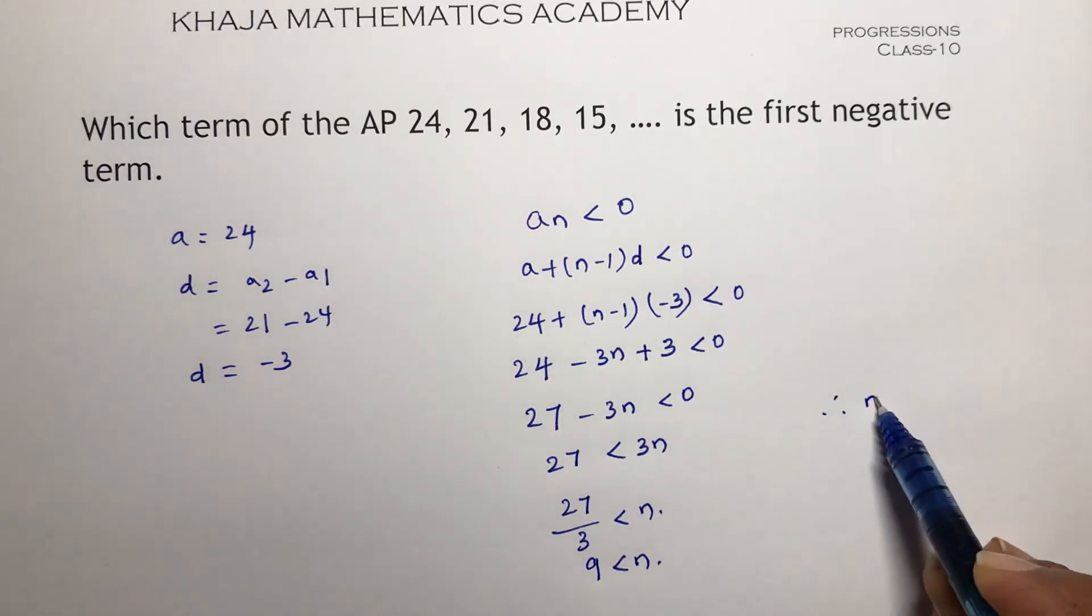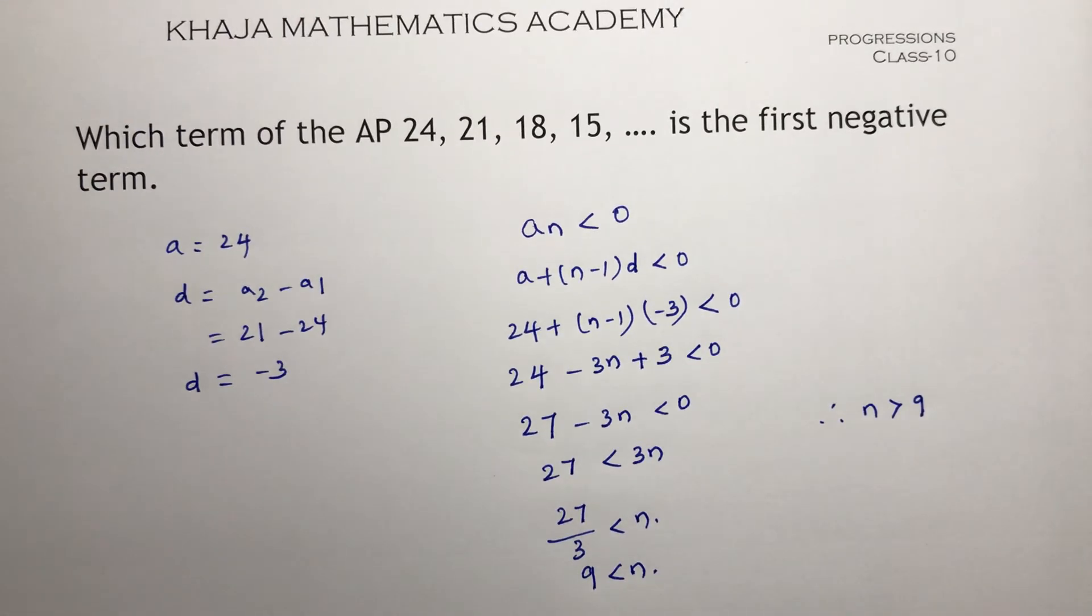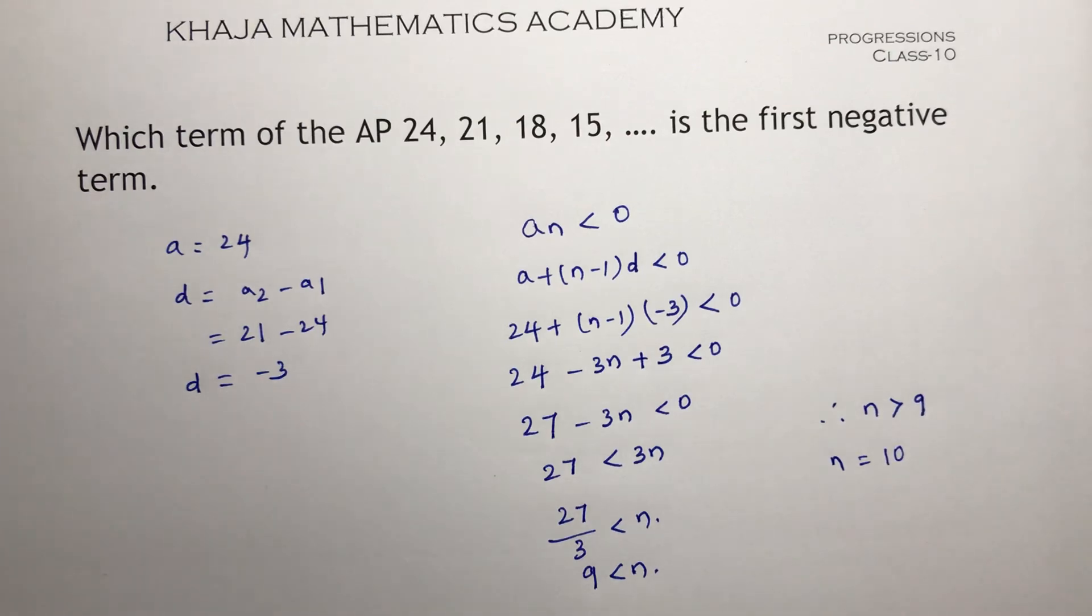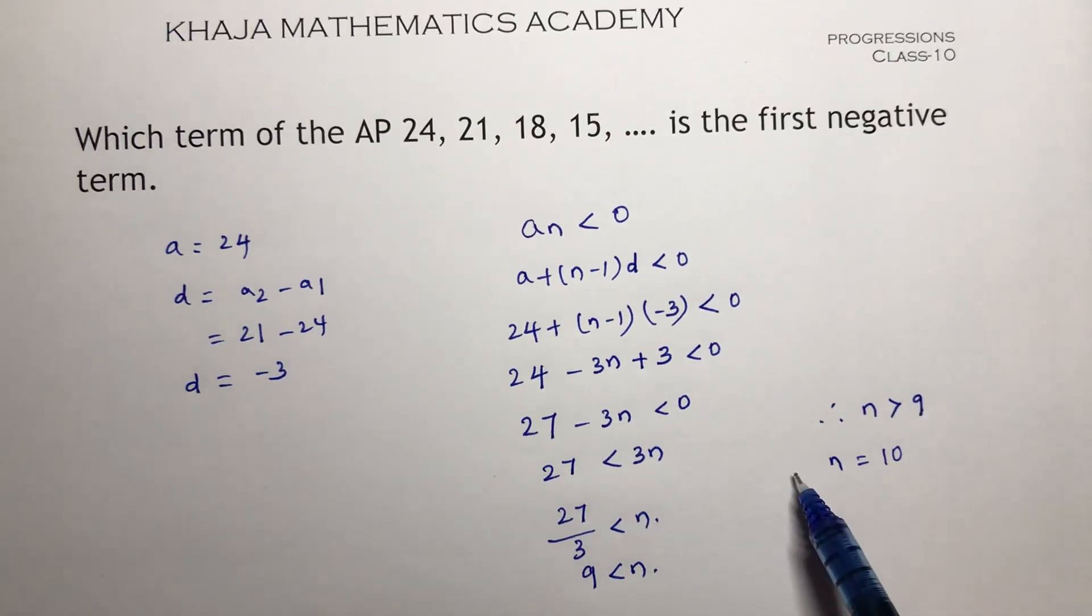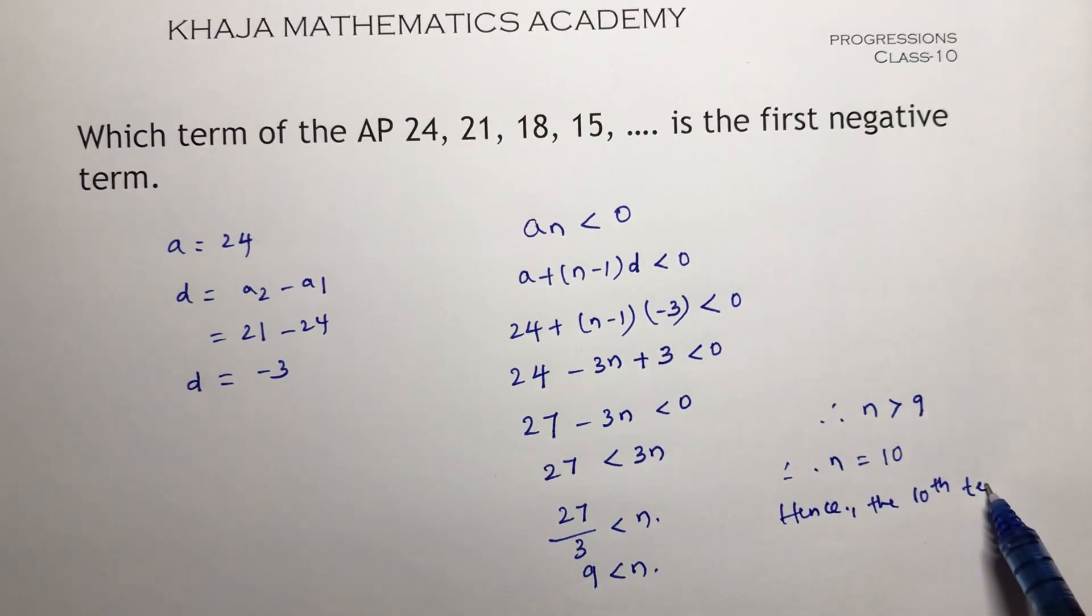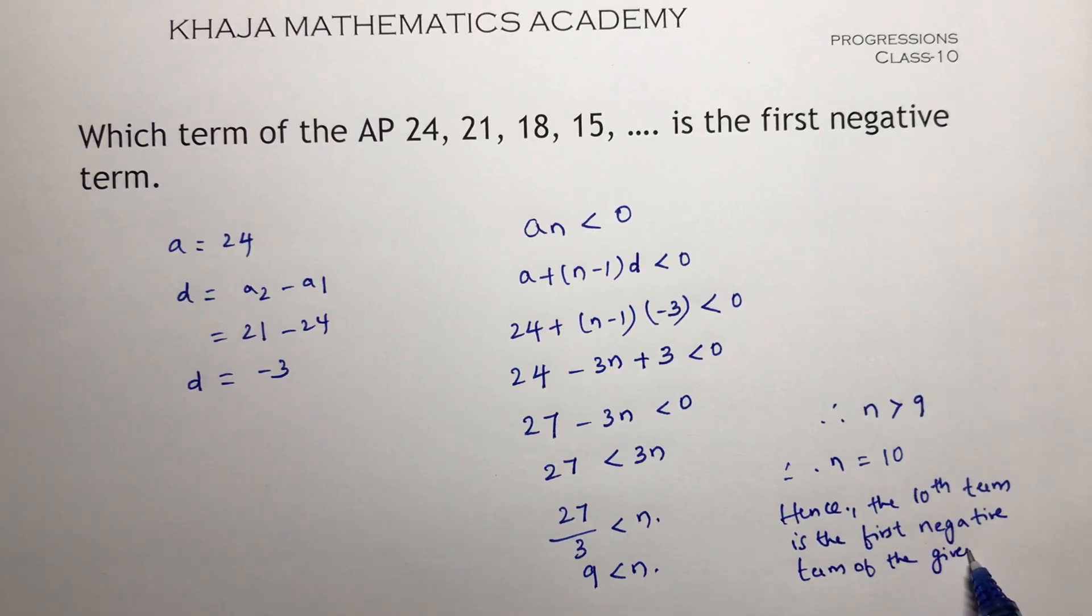Therefore, n is greater than 9. So greater than 9 is which term? You can take n as 10. Hence, the 10th term is the first negative term of the given AP. Thank you.